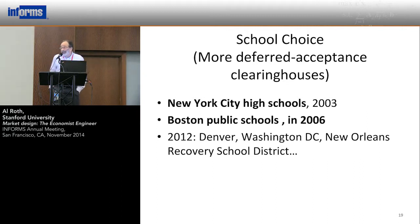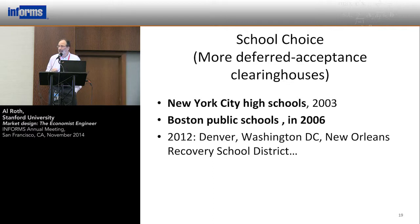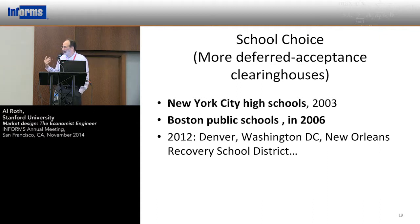A lot of American cities — a growing number — are now thinking about how to assign children to schools in ways that utilize the information families have about which schools would be good for their children. Loosely speaking, one of the problems in the United States is that people who live in poor neighborhoods are often near poor schools. There's an effort to allow children to move around to get to better schools that their parents think would be better for them.